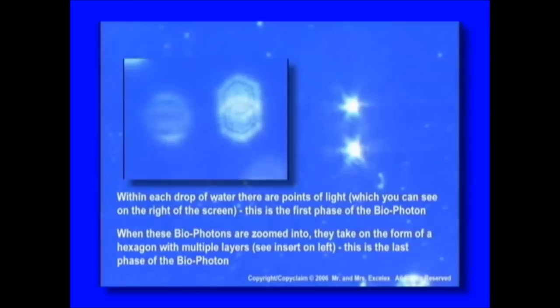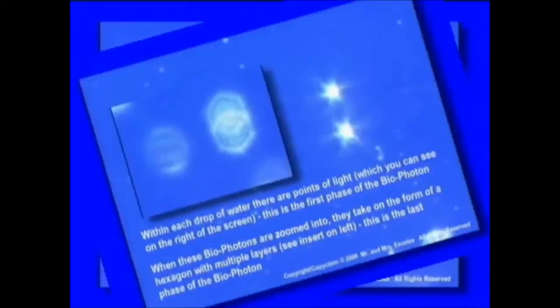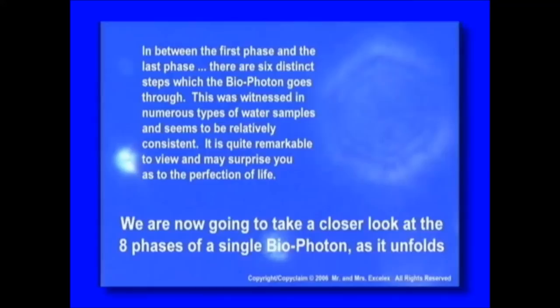Within each drop of water there are points of light - this is the first phase of the biophoton. When these biophotons are zoomed into, they take on the form of a hexagon with multiple layers - this is the last phase of the biophoton. In between the first phase and the last phase, there are six distinct steps which the biophoton goes through. This was witnessed in numerous types of water samples and seems to be relatively consistent. It is quite remarkable to view, and may surprise you as to the perfection of life.